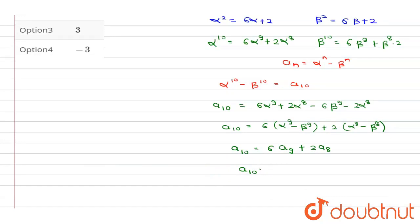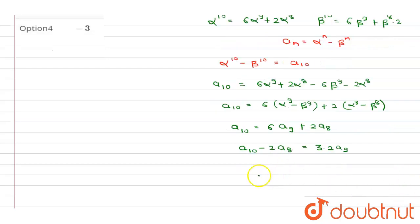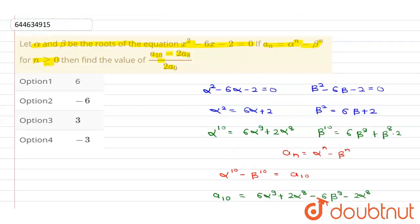Rearranging: a10 minus 2·a8 equals 6·a9, which can be written as 3 times 2·a9. Therefore (a10 minus 2·a8) divided by 2·a9 equals 3. This is the value asked for in the question, so 3 is our answer, which corresponds to option C.